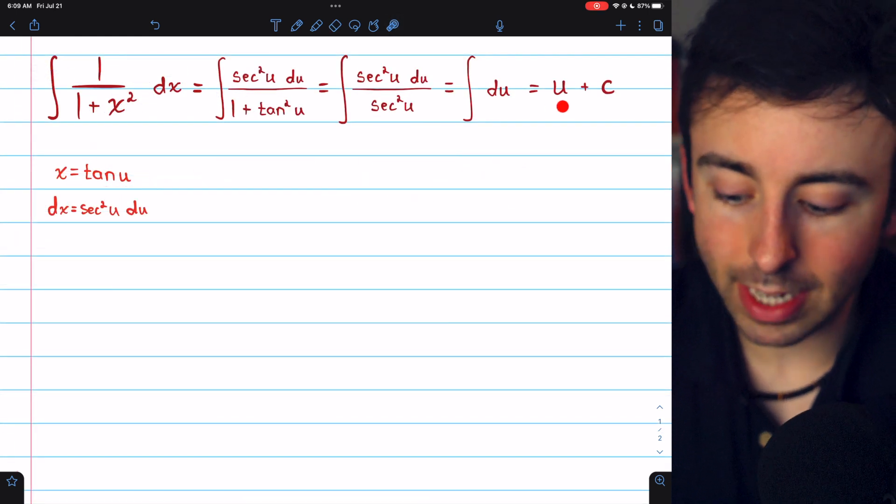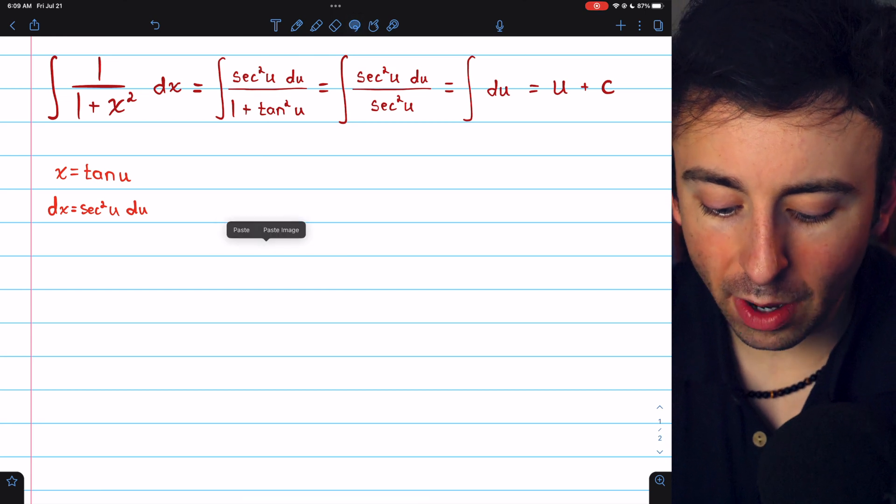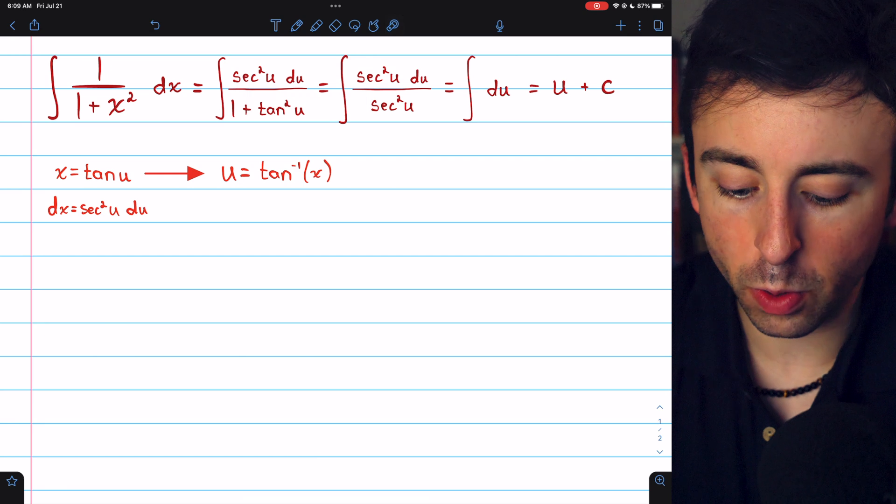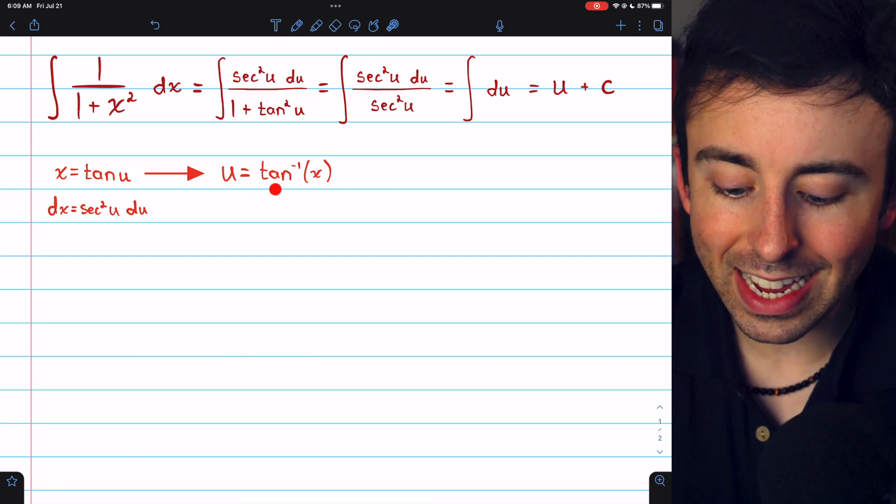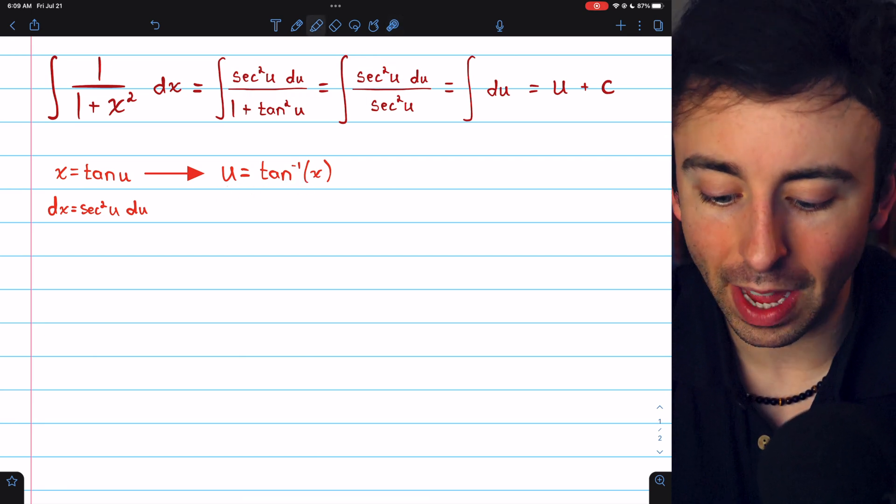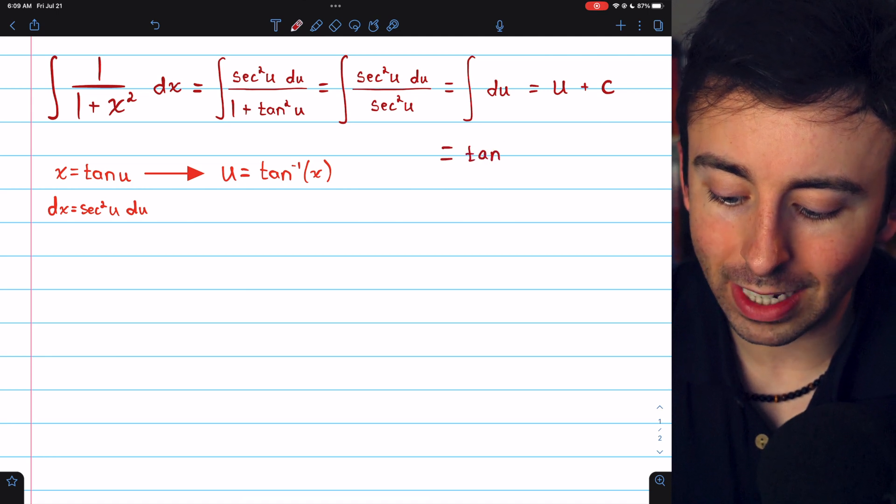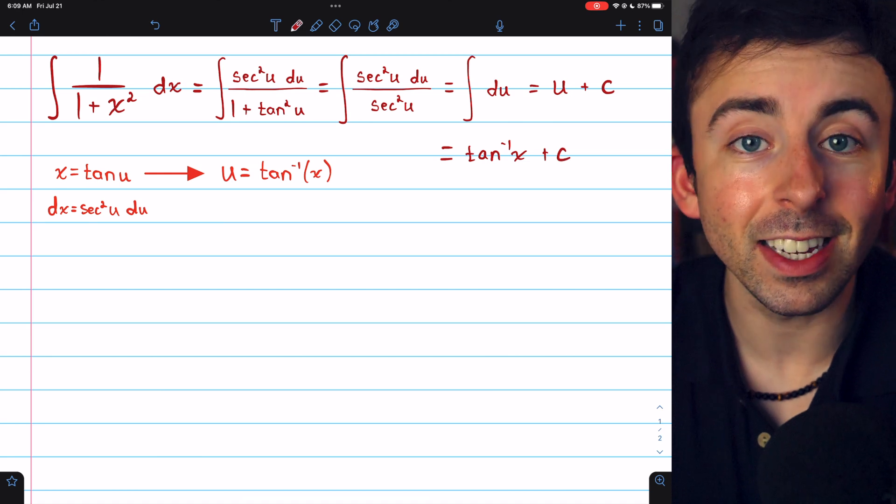That is simply u plus the arbitrary constant. And then, what's u? Well, if x equals the tangent of u, then of course u is the inverse tangent of x. And so, again, we arrive at the result that the integral is the inverse tangent function plus c.